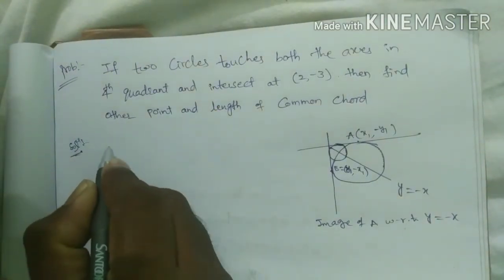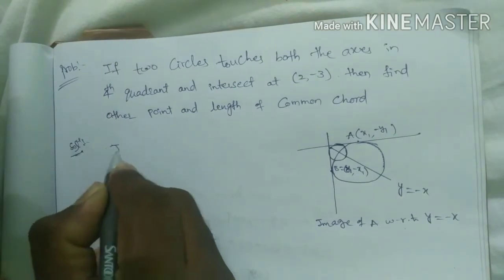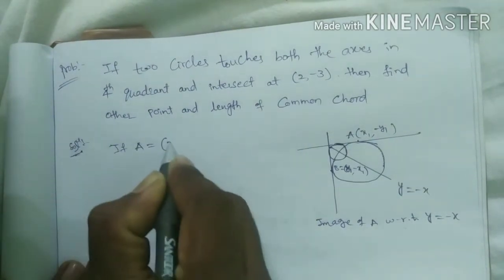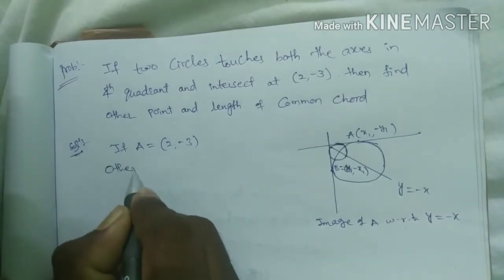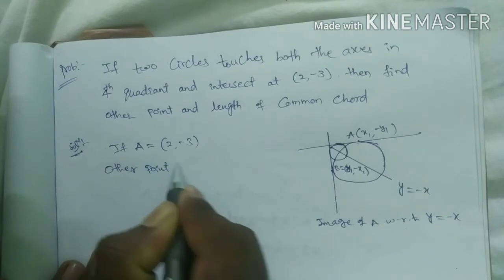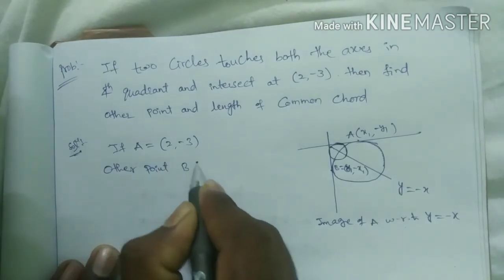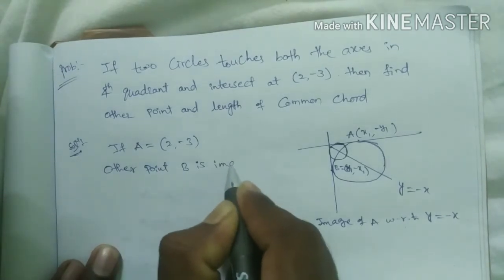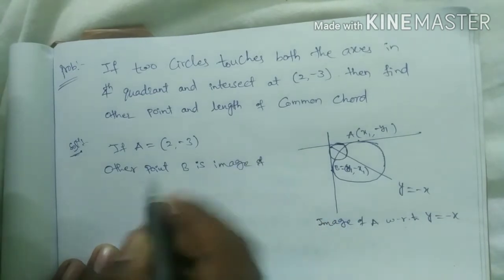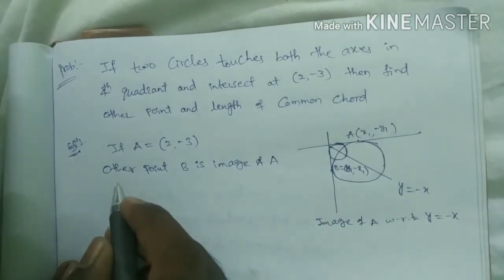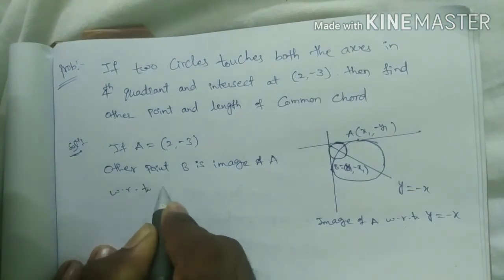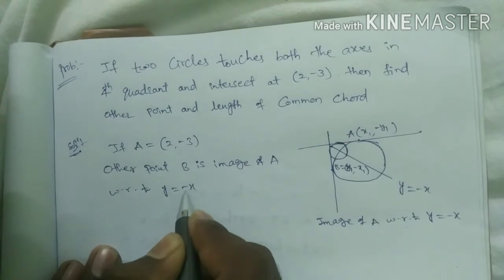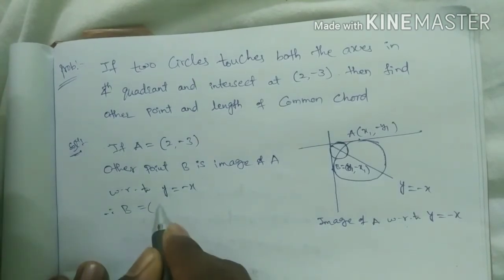Solution: If A = (2, -3), other point B is image of A with respect to y = -x. Therefore, B = (3, -2).